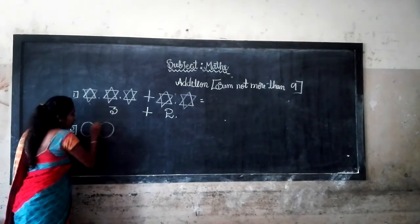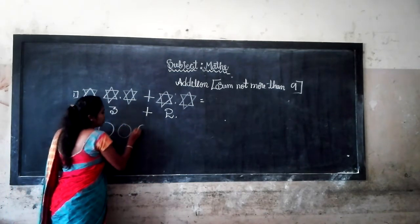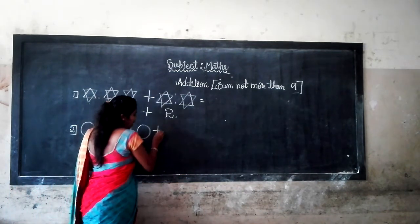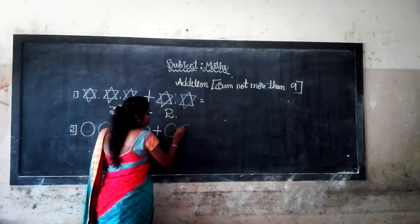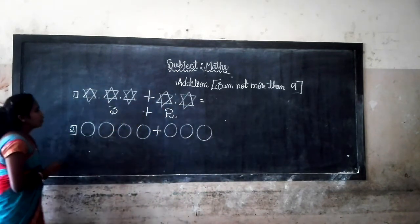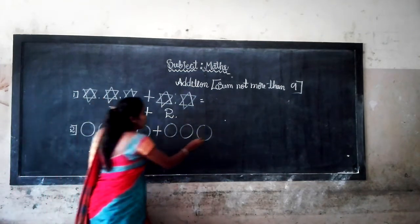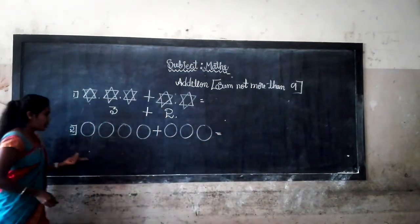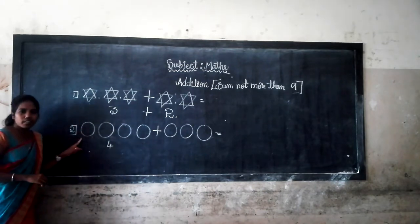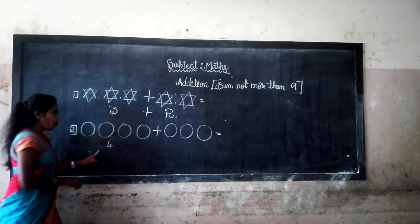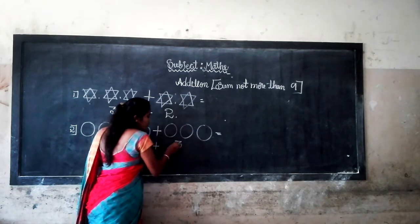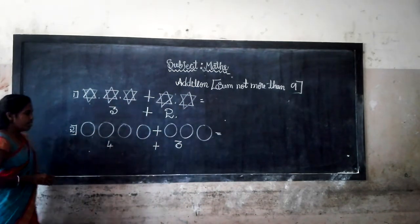One, two, three, four. Then last: one, two, three. Now you come and count: one, two, three, four. How many circles are there? Four. And last: one, two, three. How many circles are there? Three circles.